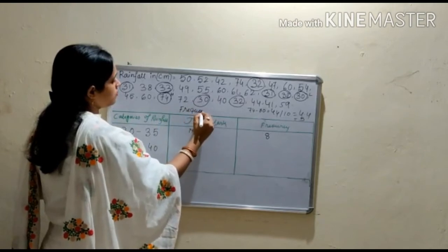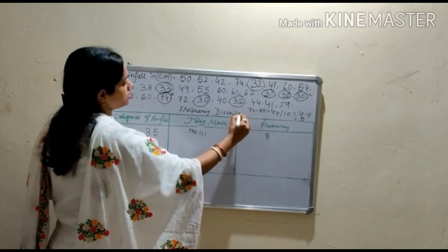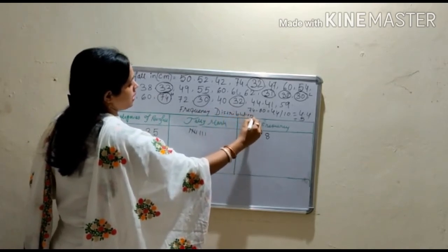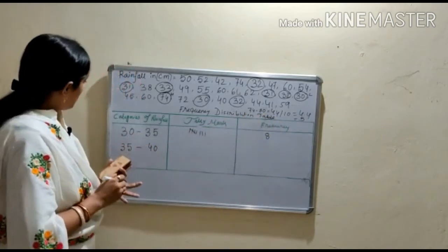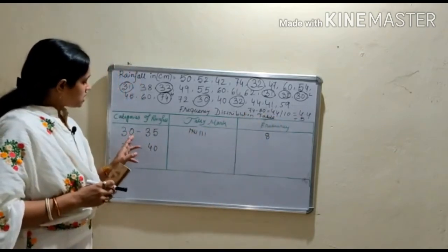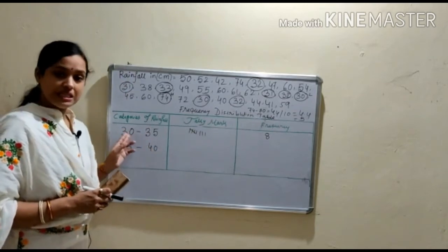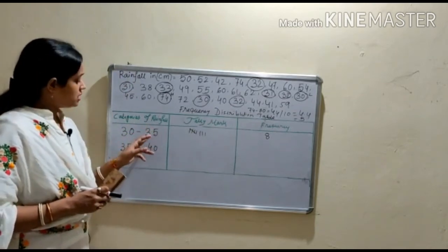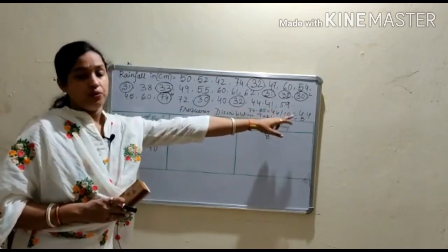Frequency distribution table. In this section, 30 to 35, the lower limit here is 30 and upper limit is 35. And range is 5 which we found from the calculation.